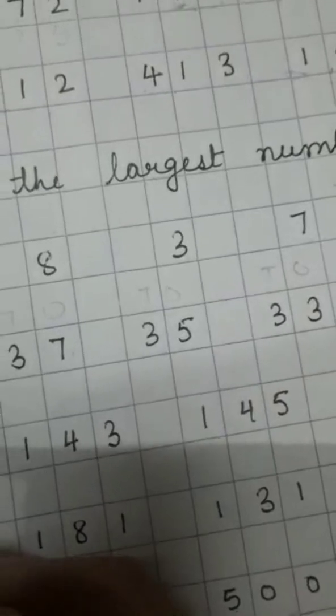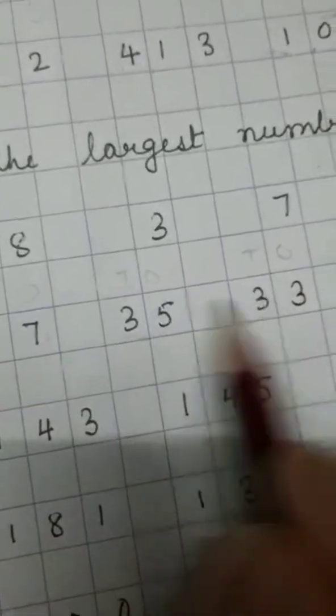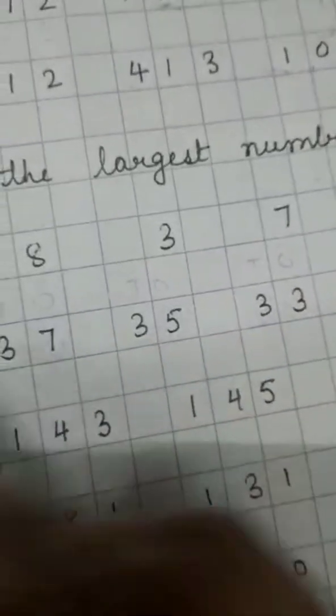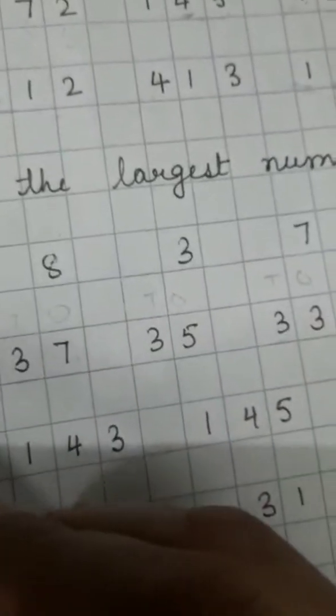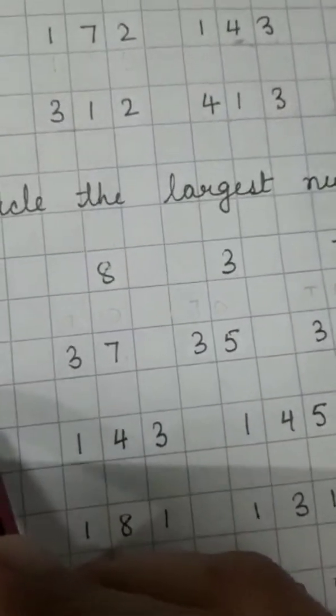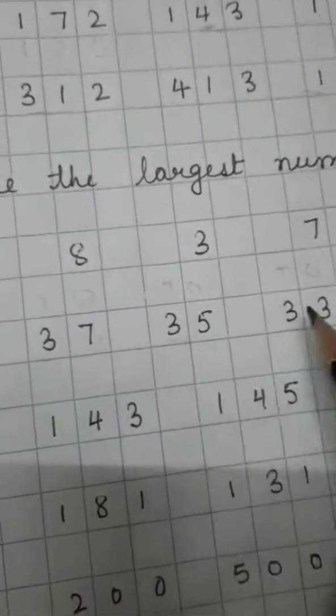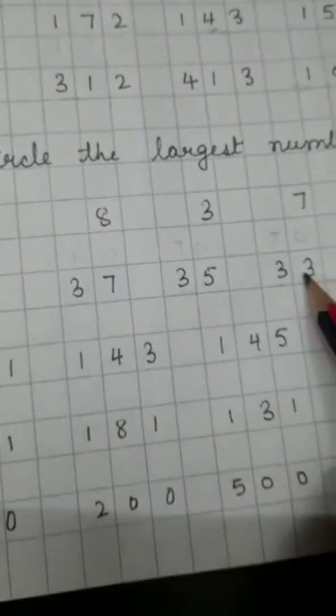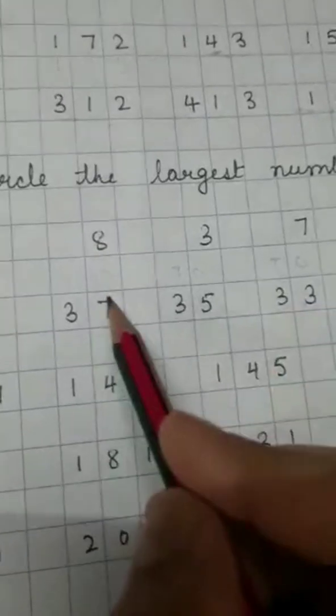again we have two digit number. So first we will see the number at 10th place. It is same everywhere, 1, 2, 3, 4. In all the 4 places it is same. So we will come to 1, 3, 3, 4. Now in 1's place we have 2, 7, 5 and 3. So which is the largest number? 37.